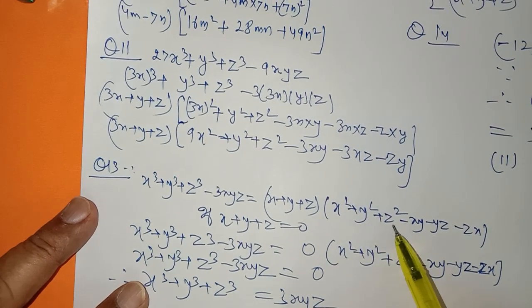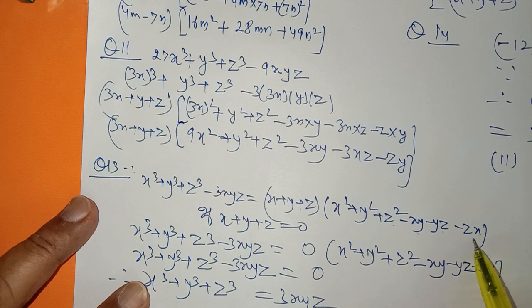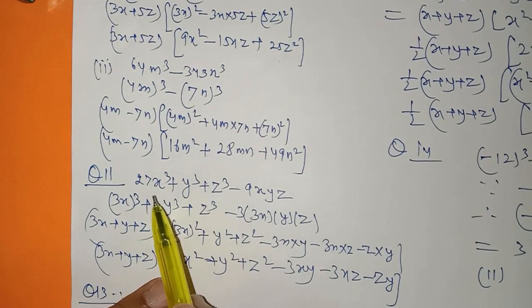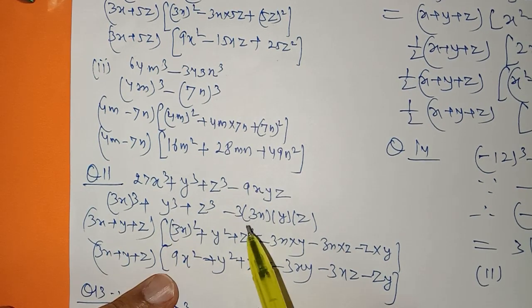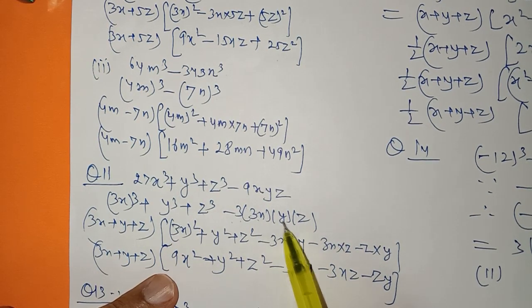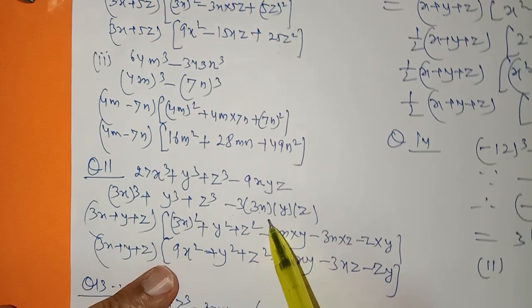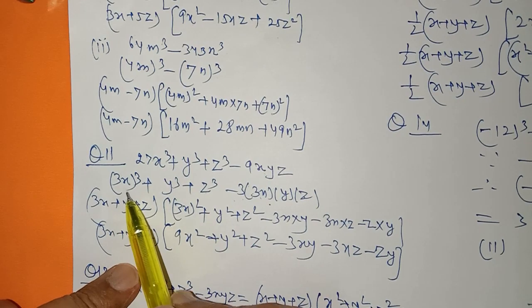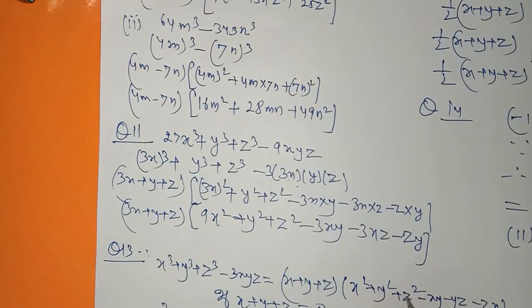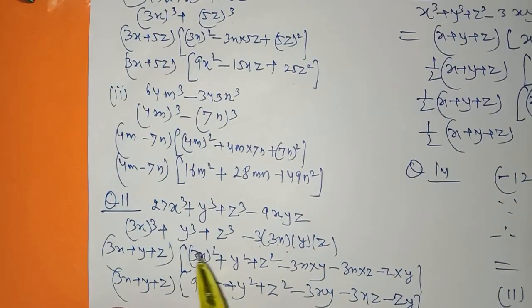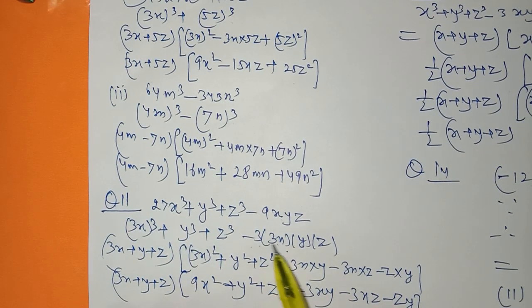Now for the identity involving x³ plus y³ plus z³ minus 3xyz, you need to know the formula well: it equals (x plus y plus z)(x² plus y² plus z² minus xy minus yz minus zx). So for (3x)³ plus y³ plus z³ minus 3 into 3x into y into z, which becomes minus 9xyz, apply the formula. x³ plus y³ plus z³ minus 3xyz equals (x plus y plus z)(x² plus y² plus z² minus xy minus yz minus zx).